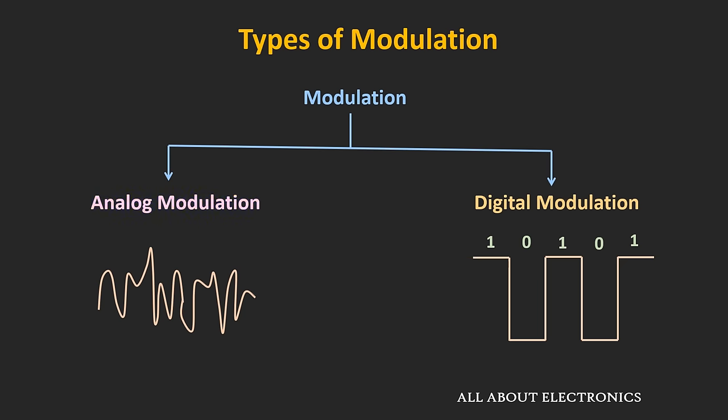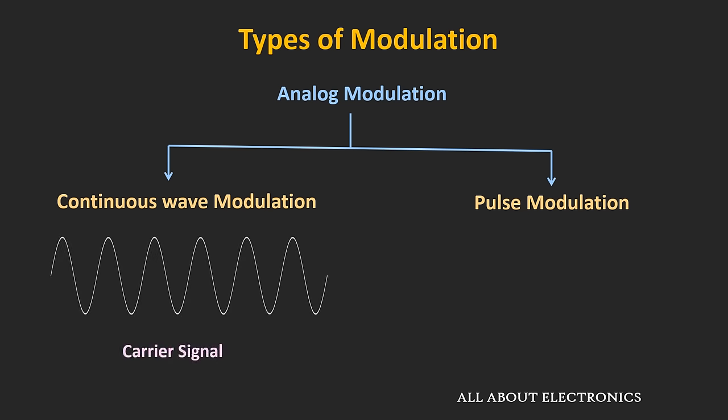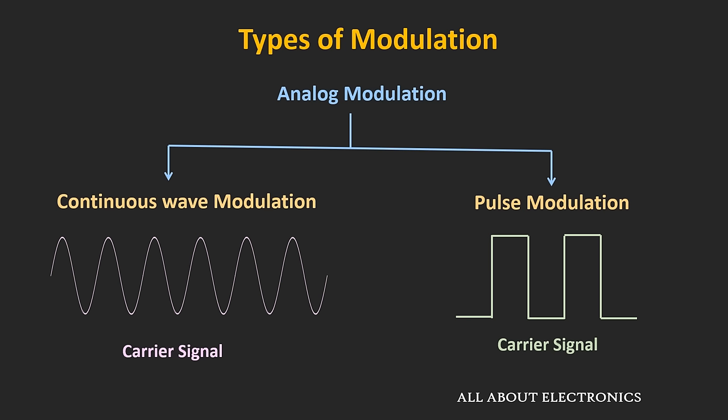Let's talk about analog modulation. Based on the type of carrier signal, analog modulation can be further classified into two categories: continuous wave modulation and pulse modulation. If the carrier signal is a continuous wave signal like a sine wave, it is known as continuous wave modulation. On the other hand, if the carrier signal is a pulse signal, it is known as pulse modulation.